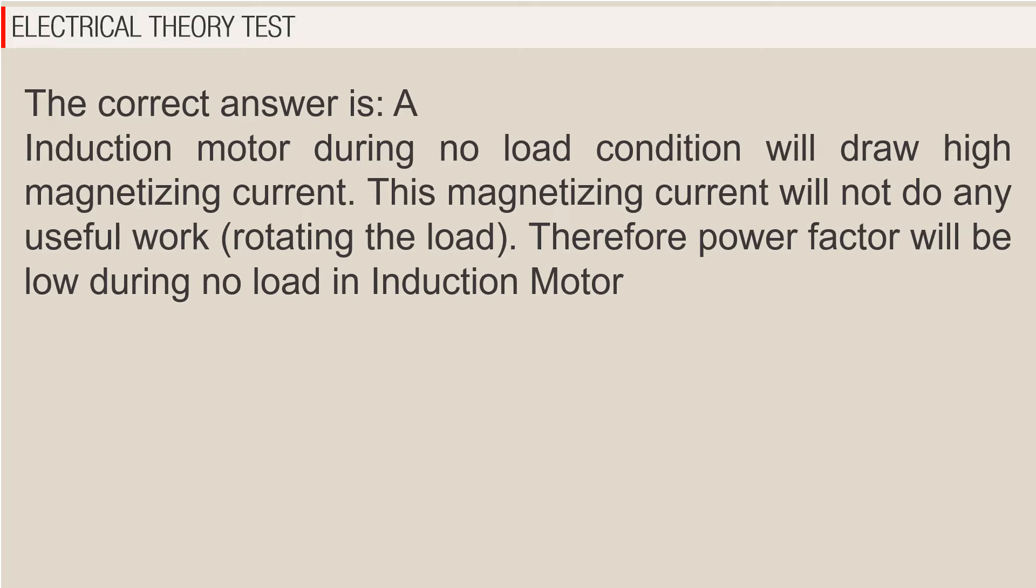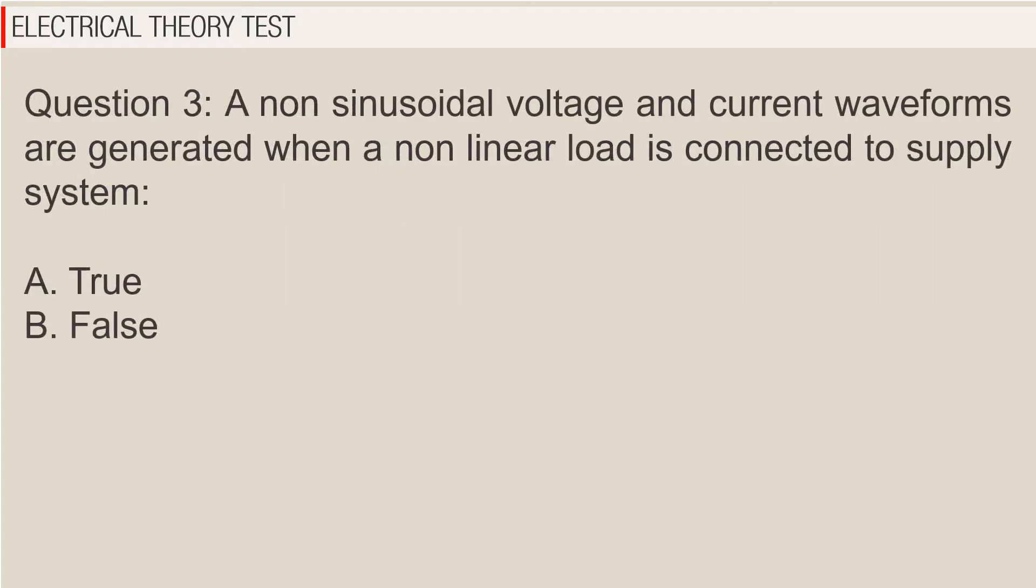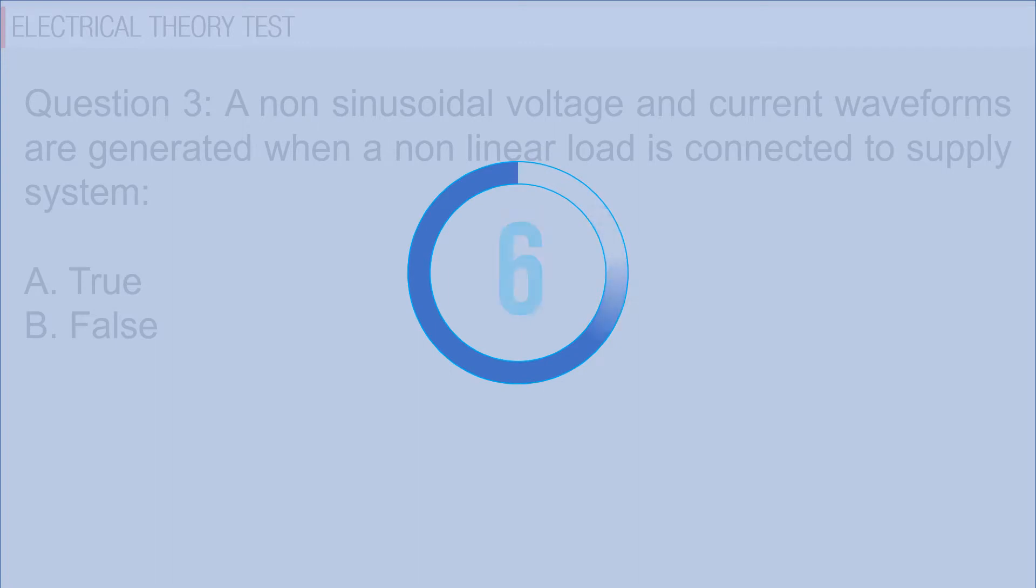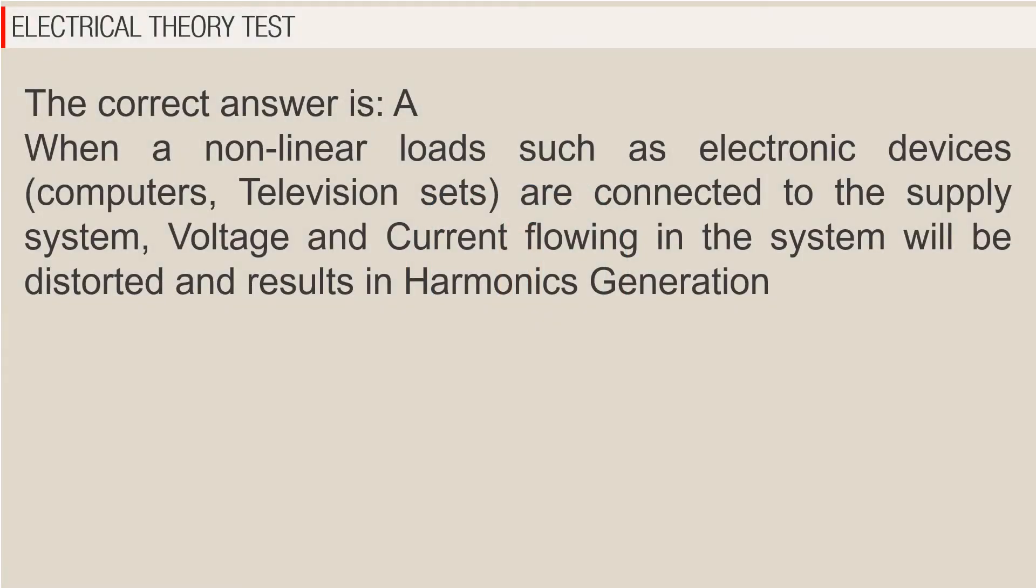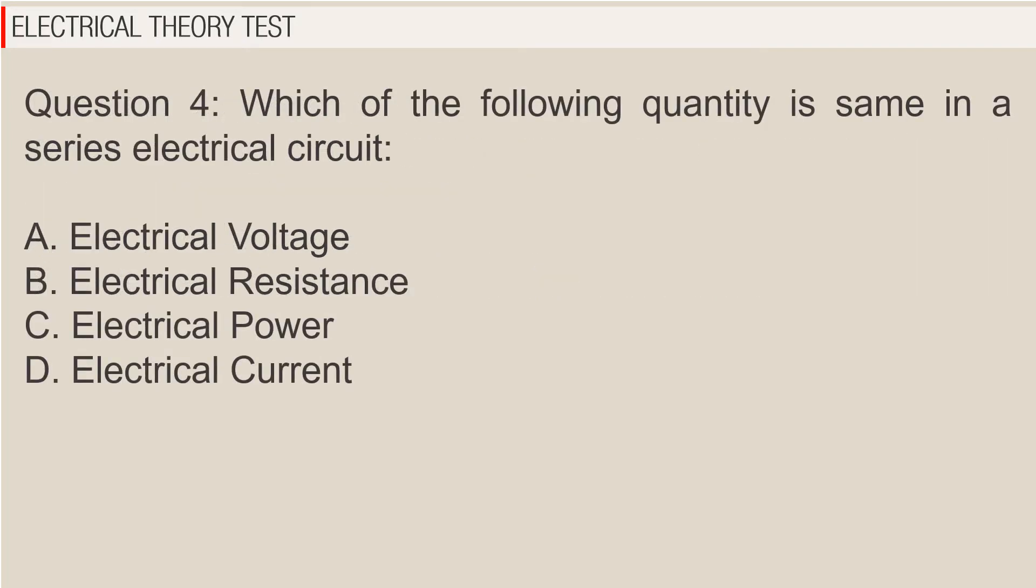Question 3: Non-sinusoidal voltage and current waveforms are generated when a non-linear load is connected to supply system. A. true, B. false. The correct answer is A true. When a non-linear load such as electronic devices, computers, television sets are connected to the supply system, voltage and current flowing in the system will be distorted and results in harmonics generation.